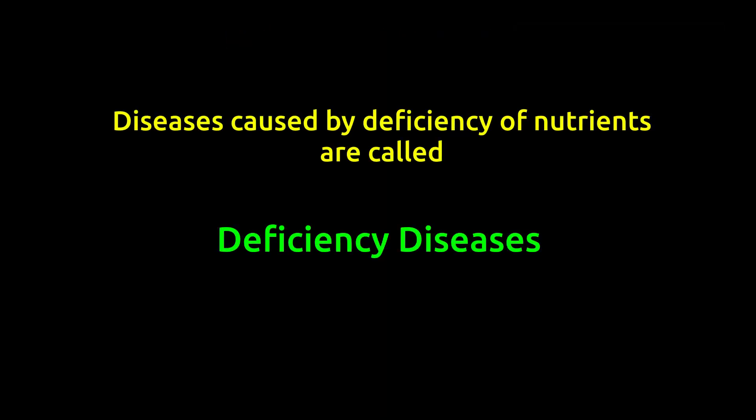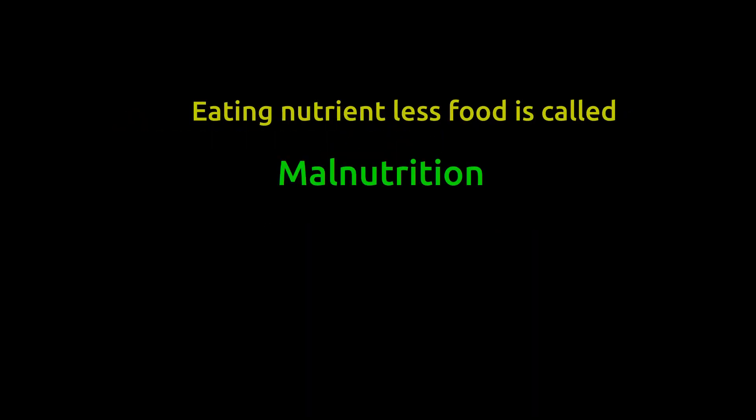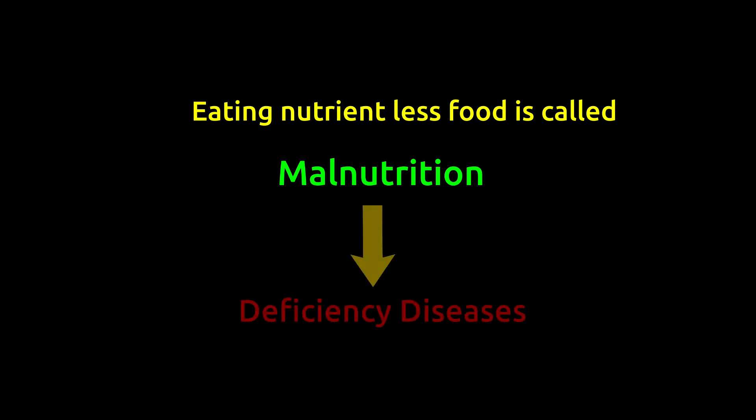You can see that deficiency of nutrients leads to various diseases. These diseases are commonly known as deficiency diseases. Deficiency diseases are caused by malnutrition. Malnutrition means eating food which lacks all the required nutrients. For example, if your diet includes all the nutrients except vitamin A, it is malnutrition as your daily need of vitamin A is not fulfilled. Malnutrition continued for some time leads to deficiency disease.